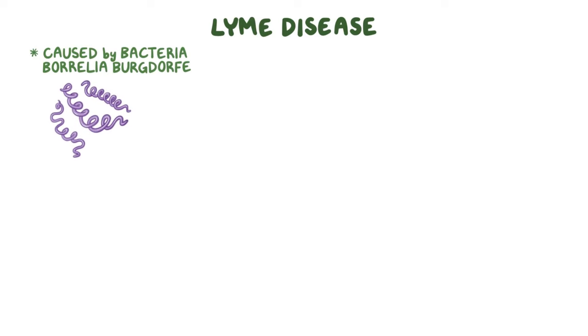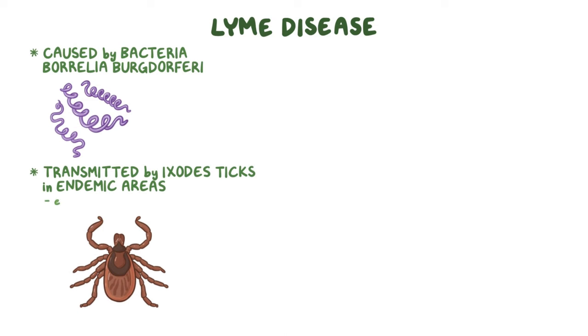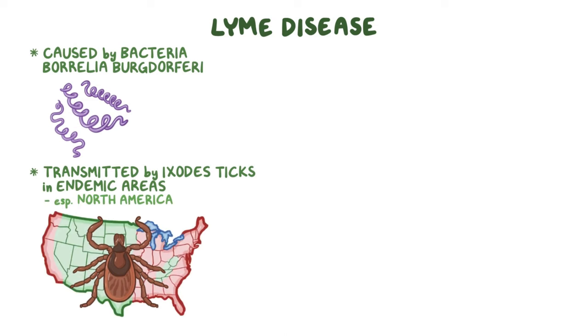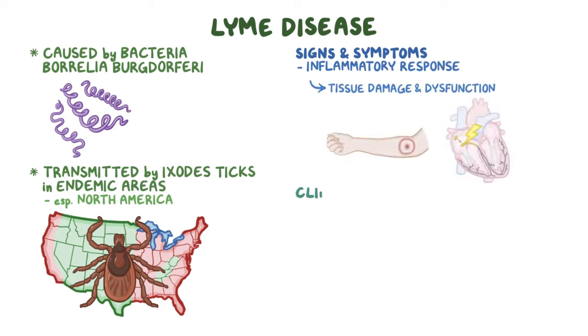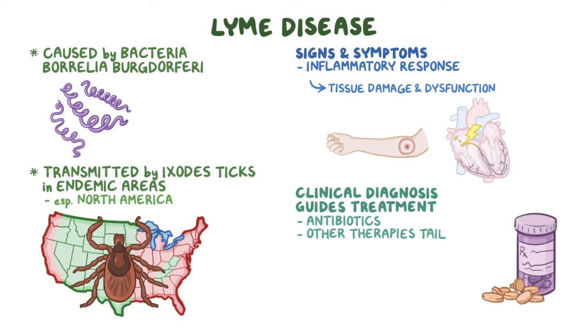To recap: Lyme disease in humans and domestic animals is caused by the bacteria Borrelia burgdorferi, and is transmitted by Ixodes ticks in endemic areas, especially North America. If present, signs and symptoms are caused by the inflammatory response, which can lead to tissue damage and dysfunction. A clinical diagnosis guides treatment with antibiotics or other therapies tailored to tissue dysfunction.